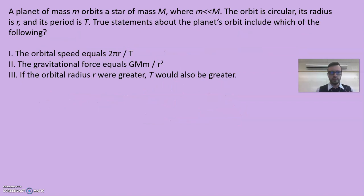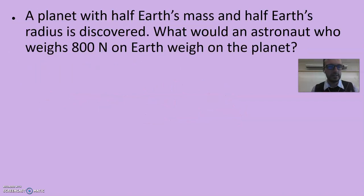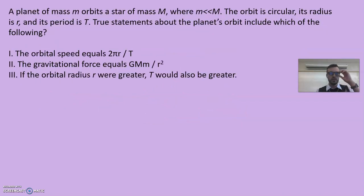Let's go to our next one here. A planet of mass m orbits a star of mass M, where m is much smaller than M. The orbit is circular, so we have a little tiny planet coming around a big planet.